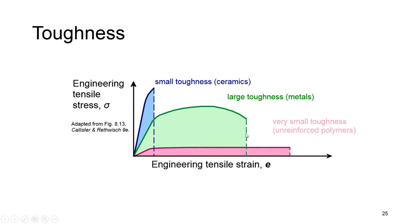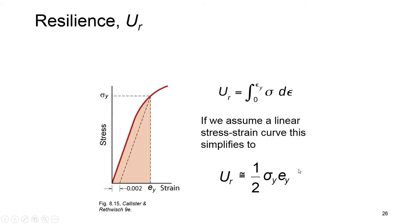For the pink one, or for typical metals like the green one, we have as a ductile fracture a combination of elastic energy and plastic energy. The ability of a material to store energy is called resilience, shown by UR. The energy stored in the elastic region can be recovered easily.